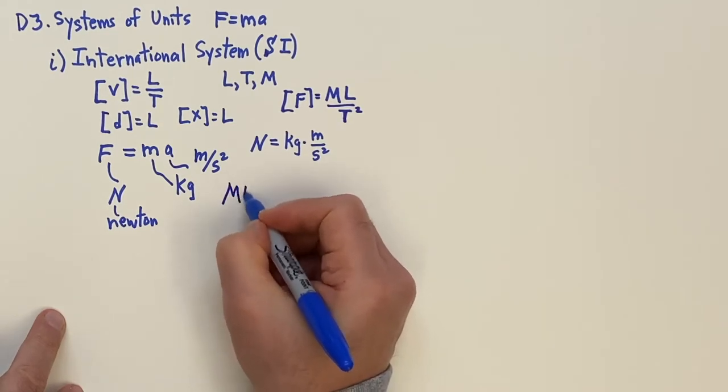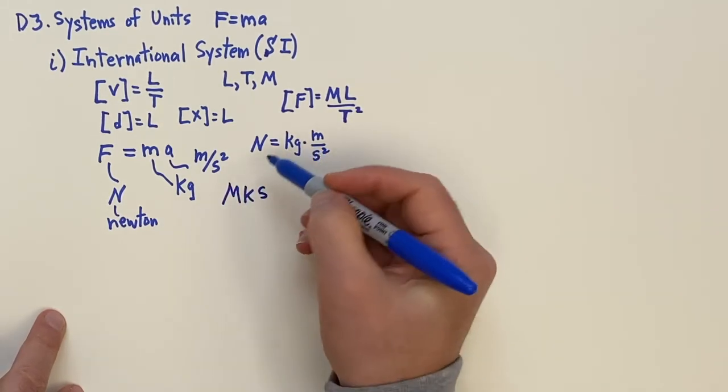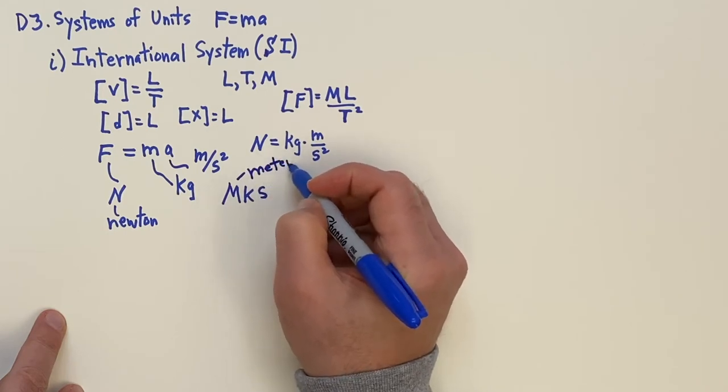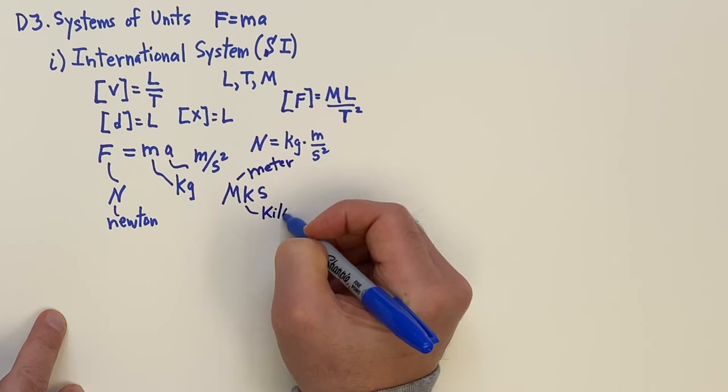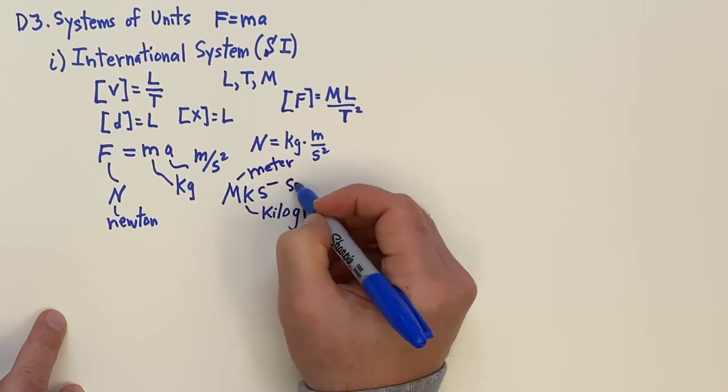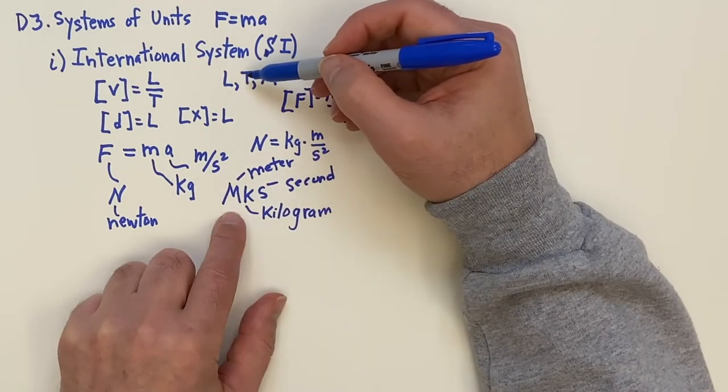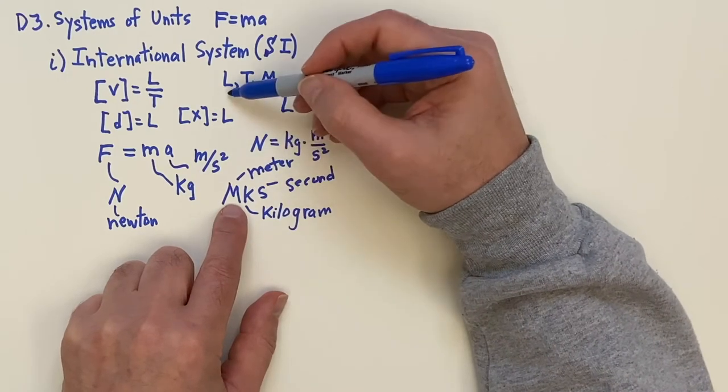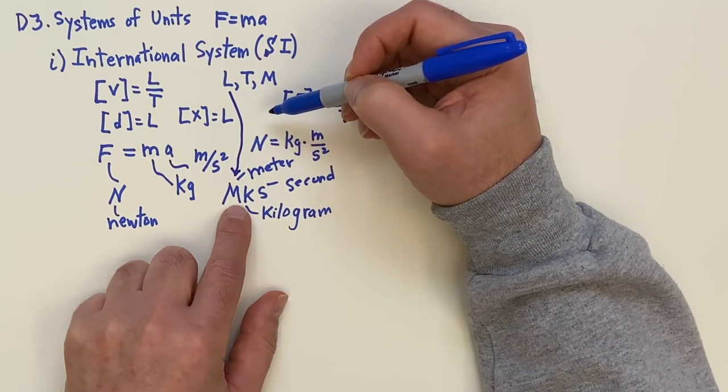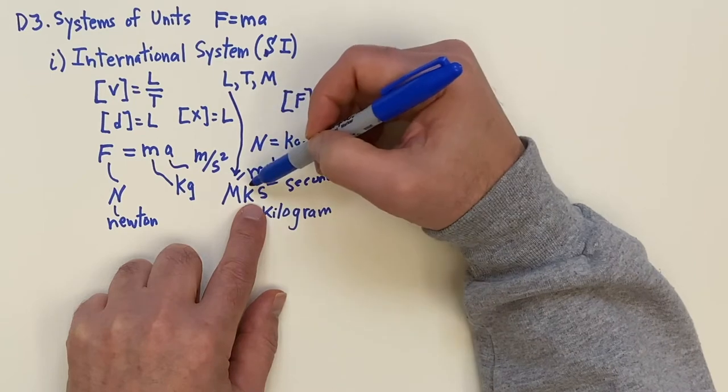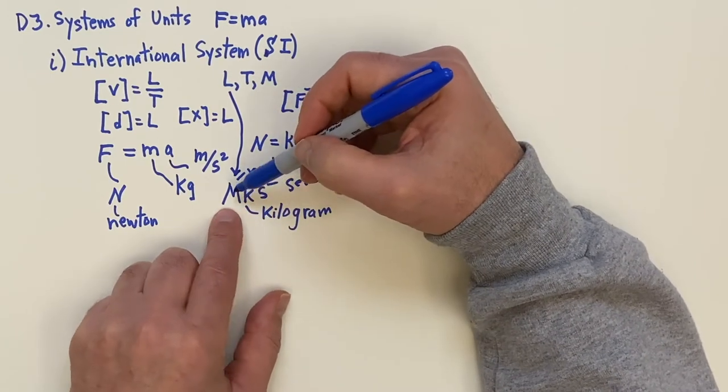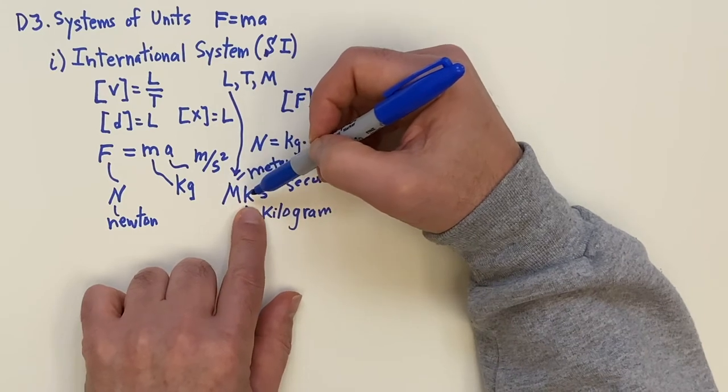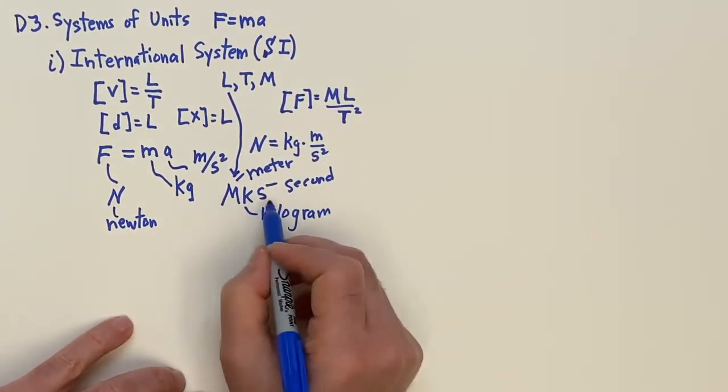This is also called the MKS system because the M is going to stand for meter. This stands for meter. K stands for kilogram. And S stands for second. So they're giving the big three length, time and mass. So what they're doing is the order they're using is they're putting the length first, the meter, and they're putting the mass second, kilogram, and the time last. Now see that M, a lot of M's being used here. You just have to look at the context. This MKS means meters, kilograms, and seconds. And they capitalize it when they do it like that.